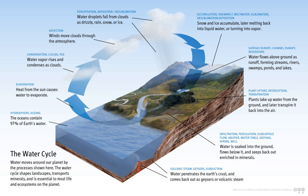The water moves from one reservoir to another, such as from river to ocean, or from the ocean to the atmosphere, by the physical processes of evaporation, condensation, precipitation, infiltration, surface runoff, and subsurface flow.